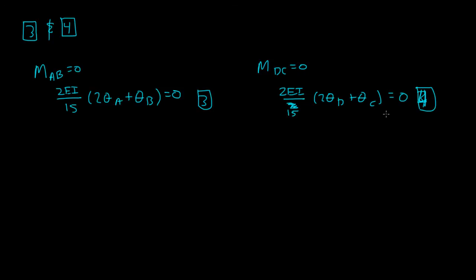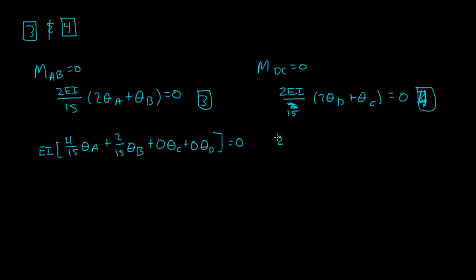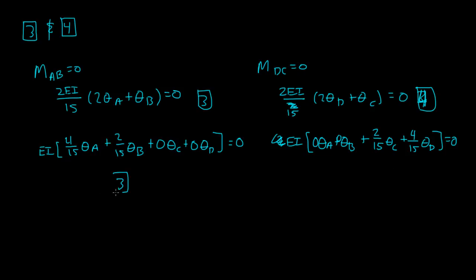Let me rewrite these. Pulling out EI and distributing the 2/15, equation 3 becomes: EI times [4/15 θ_A + 2/15 θ_B + 0 θ_C + 0 θ_D] equals zero. Equation 4 becomes: EI times [0 θ_A + 0 θ_B + 2/15 θ_C + 4/15 θ_D] equals zero.